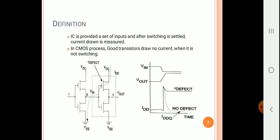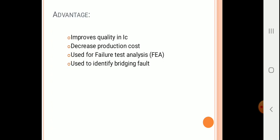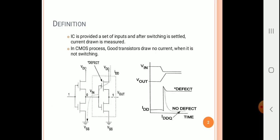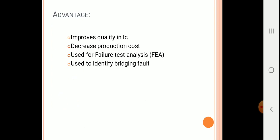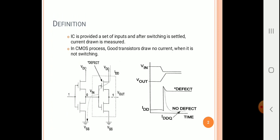Whereas a faulty transistor will draw current. When you can see the diagram, the transistor in the first stage - if it is given a one value, that PMOS transistor will be turned off and the NMOS transistor will be turned on.